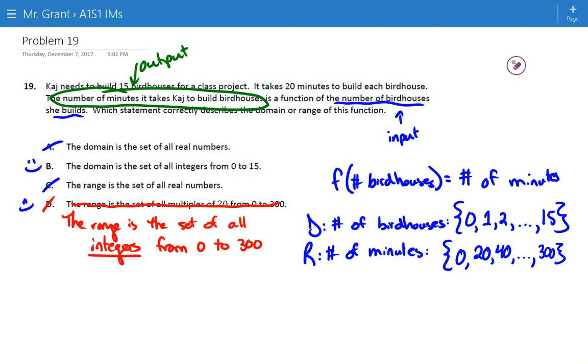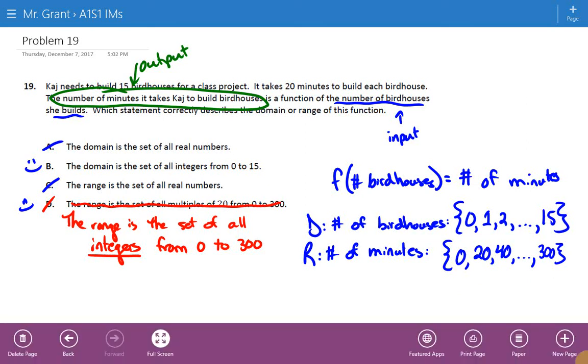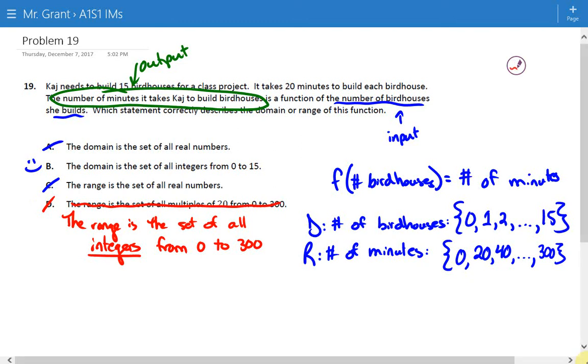It's 0, 20, 40, and it's not all, or they are integers, but it's not all integers. We're missing 1, 2, 3, 4, 5, so on and so forth, right? So D actually ends up being incorrect, and so our final answer is B.